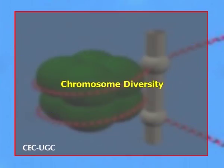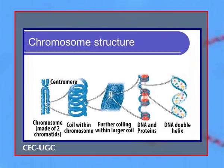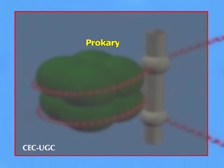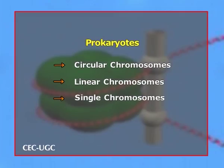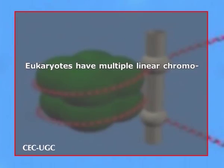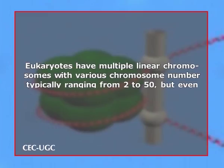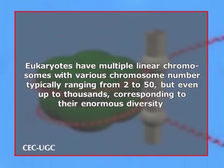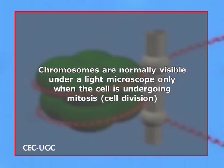Let's now discuss chromosome diversity. A chromosome is a packaged and organized structure containing most of the DNA of a living organism. The shape, size and number of chromosomes varies in different organisms. For example, prokaryotes have circular, linear, single or multiple chromosomes, or even both, while eukaryotes have multiple linear chromosomes with various chromosome numbers, typically ranging from 2 to 50 but even up to thousands, corresponding to their enormous diversity. Chromosomes are normally visible under a light microscope only when the cell is undergoing mitosis.